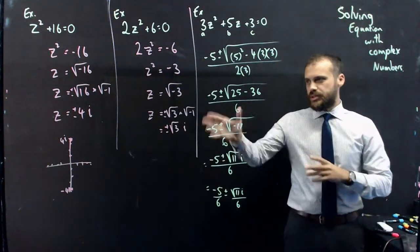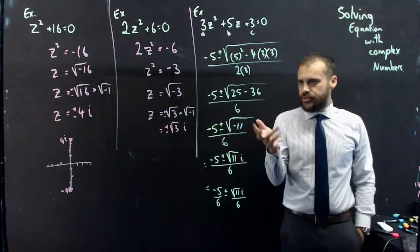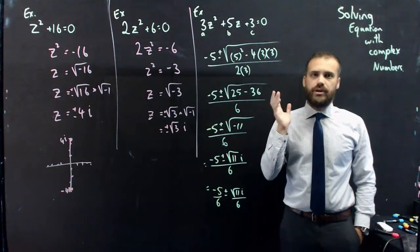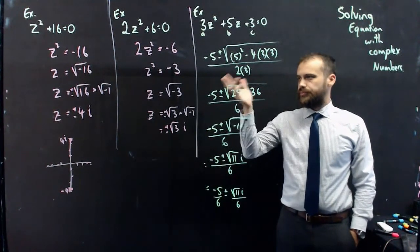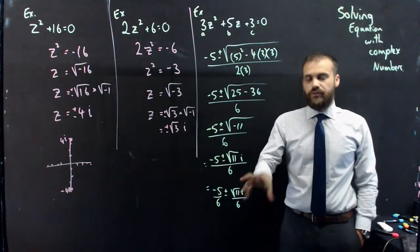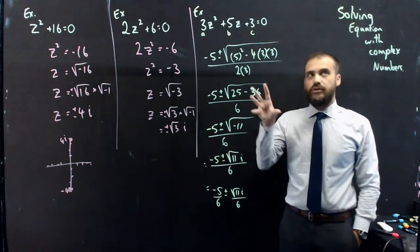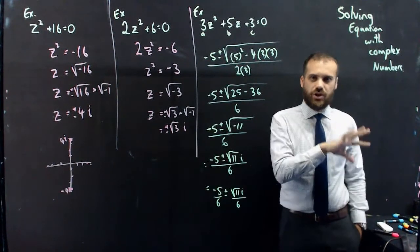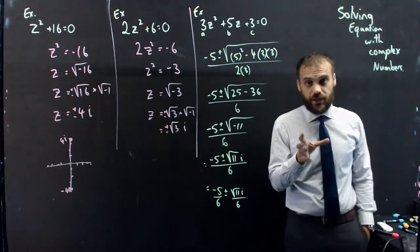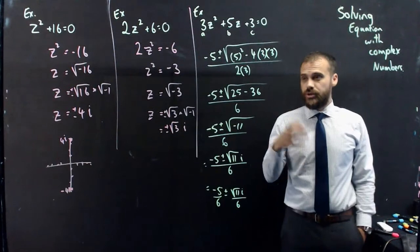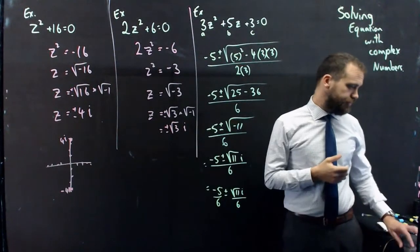So you should see that these are skills that you already have. It's just that now that you know how to deal with a negative square root, you can now get one step further and give a complex solution. I'm going to make another video where we solve some more. But this time we're going to solve it using completing the square. Skill you already know. We're just going to apply it to this stuff.